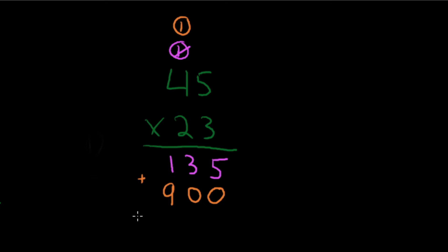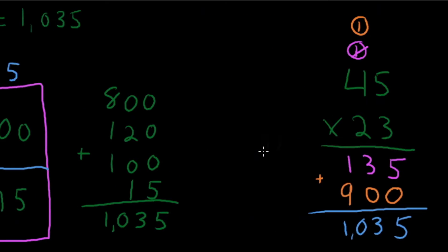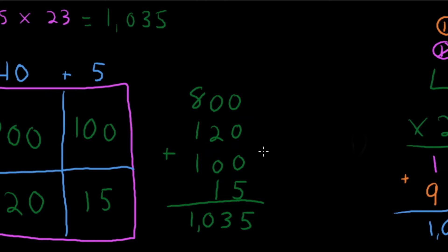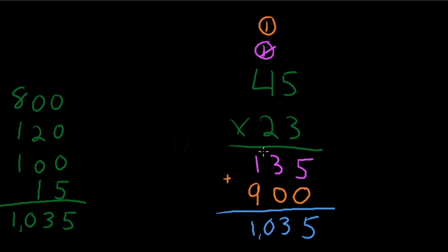To get the final answer we add everything up. Ones: 5. Tens: 3. Hundreds: 10. Our answer is 1035. Both strategies give us the same answer — great check! If you can solve a math problem more than one way, that's excellent. Review your mistakes, ask questions, then let's jump into problem number two.